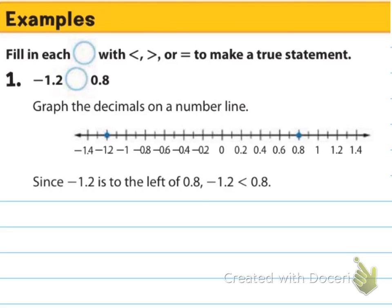So fill in each blank with the less than, greater than, or equal to to make the statement true. We've got negative 1.2 and 0.8. Remember what we talked about with the positive and negatives. Basically, if there's a negative and a positive, then the negative is a smaller number. It doesn't matter what numbers those are. The negative is always going to be smaller. So that's pretty easy. Just pay attention to the sign.